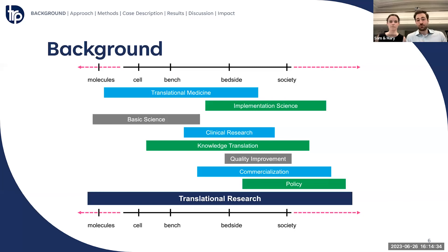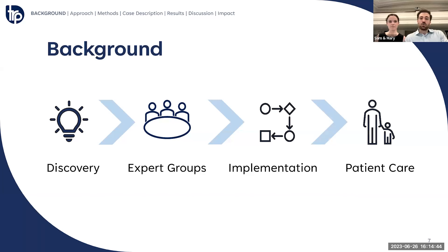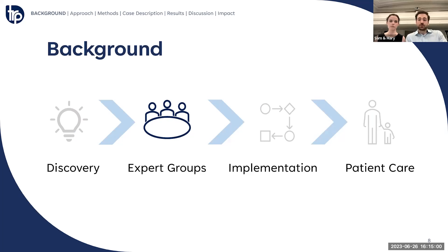The academic field of translational research seeks to understand the interactions between these stages to accelerate health innovations and ultimately improve people's health and quality of life. While each aspect of research is important and we would love to study each one, our project focuses on the latter half of this graphic with society and health systems.